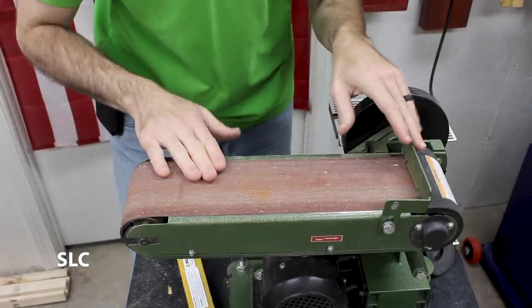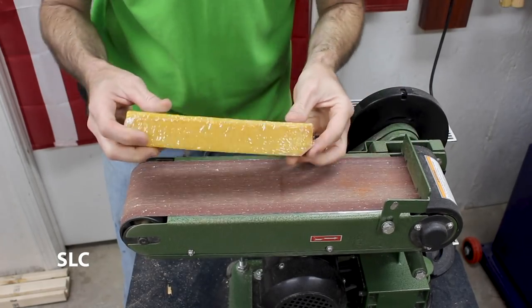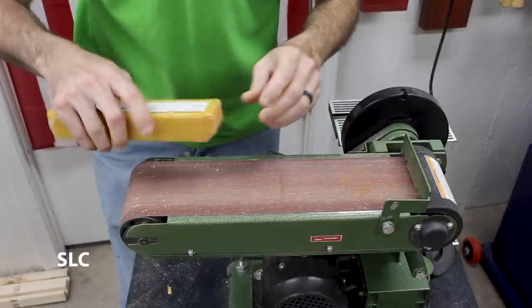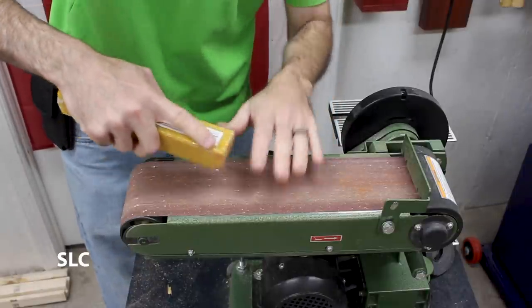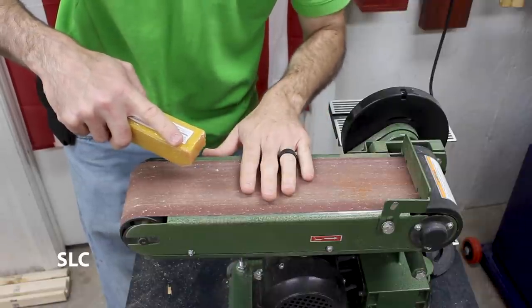Now here's a great way to extend the life and clean your sanding belt and sanding disc. This is a belt cleaning stick or I call it an eraser. You run this back and forth across your belt as it runs and it cleans off all this excess sawdust and extends the life. Let me show you how.